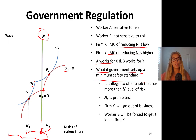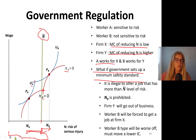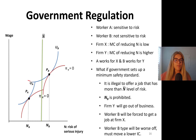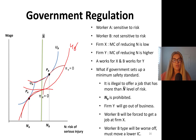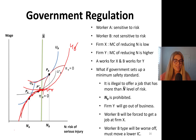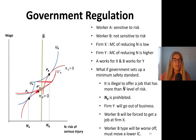Worker B will be forced to get a job at firm X. Worker B type will be worse off and move to a lower indifference curve. As worker B, I need to be tangent to firm X's isoprofit curve. The only way to do that as a B-type person is to move to a lower indifference curve, UB prime, to be tangent to that isoprofit curve. So yes, you're at the acceptable highest risk level, but your utility goes down. Person B's new indifference curve is lower, and PB prime is the new wage-risk combination — worker B is worse off.